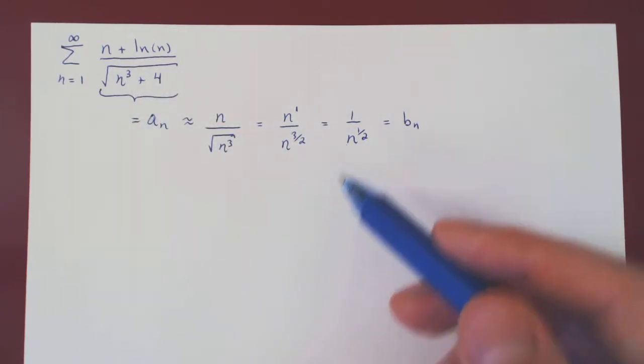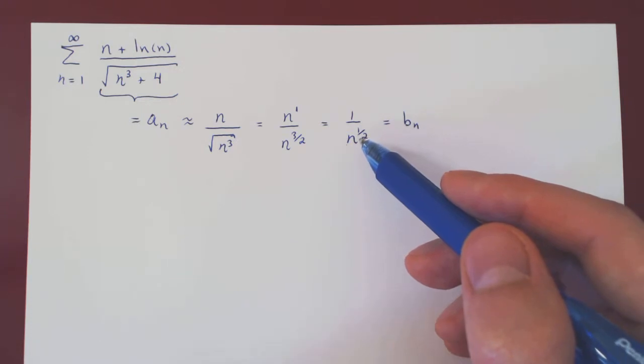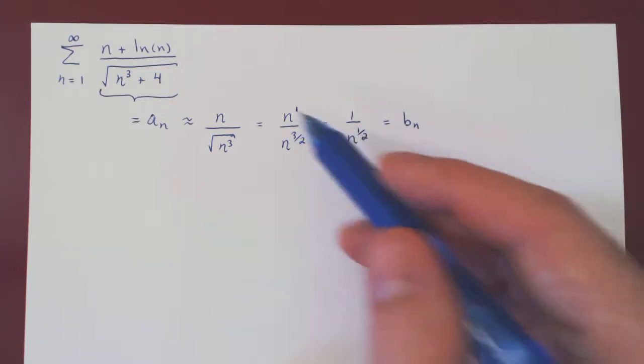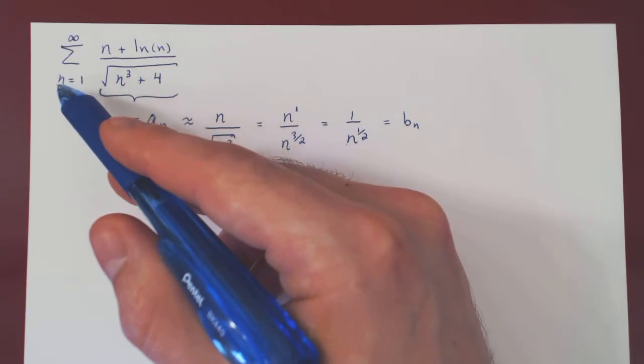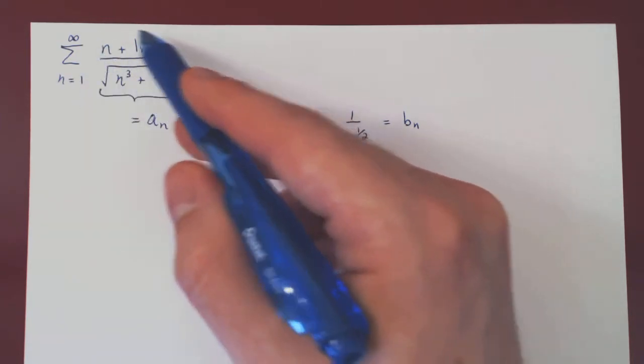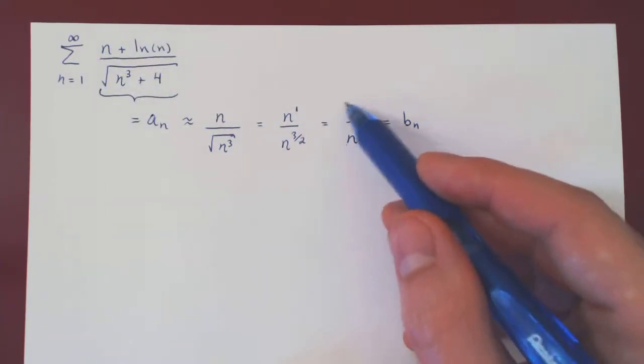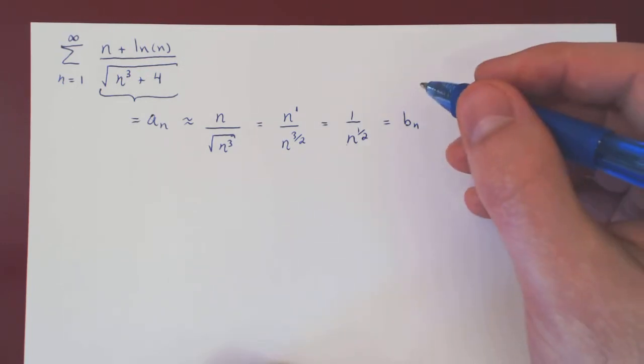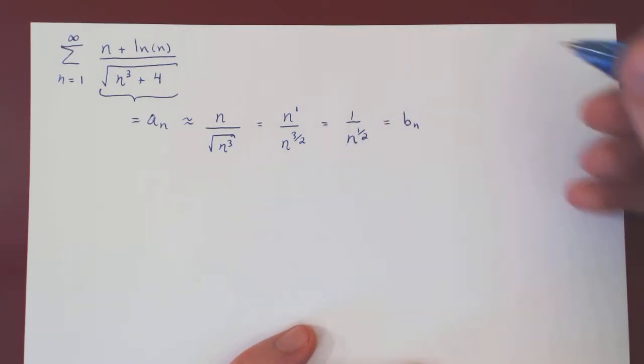Before we go any further, we have to verify the two conditions of the limit comparison test. So, the first one is obvious. When n goes from 1 to infinity, these terms are positive, these terms are positive. So, clearly, once again, an and bn are strictly positive.